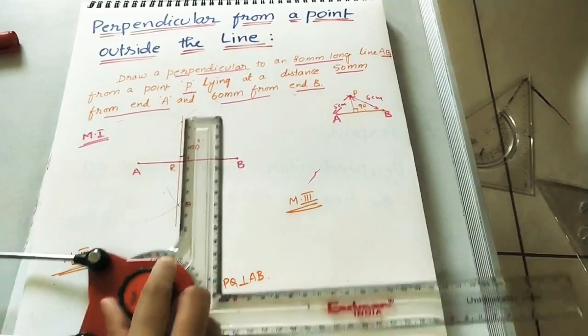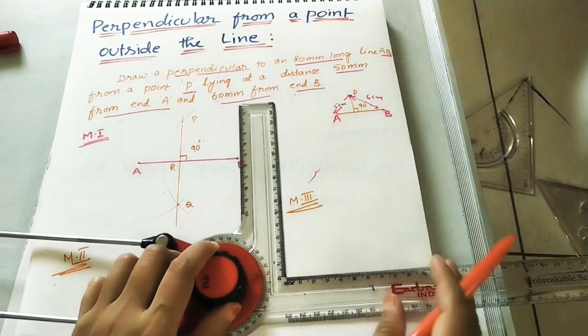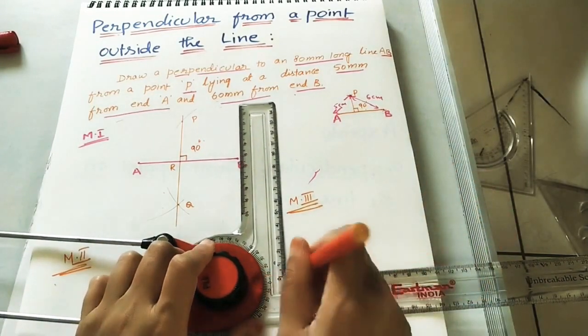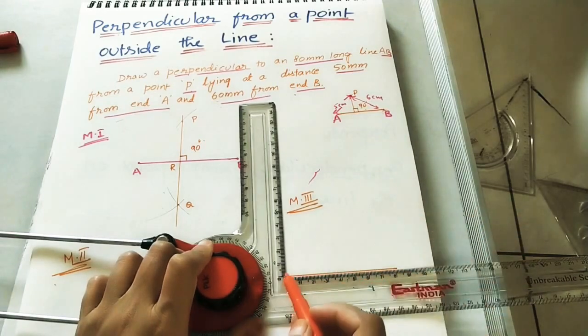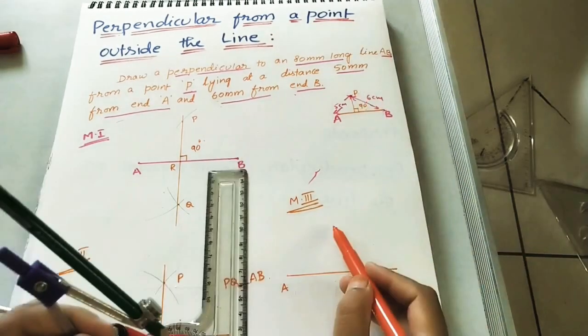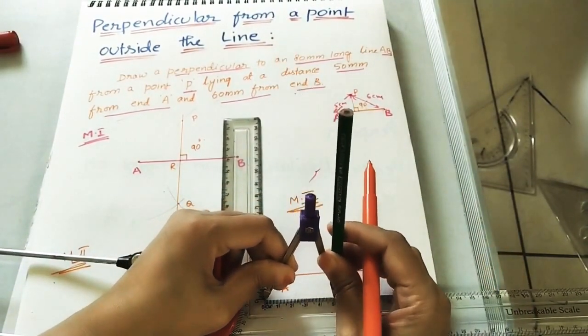The third method. In it, I am using the drafter. So, by using drafter, it is easy to do. Take the AB line. It is 8 cm. Mark the end points, 8 cm. Just do the line. And after that, where is the P point? P point is 5 cm from A. By using compass, do it. So, main aim is we need to mark the P point.